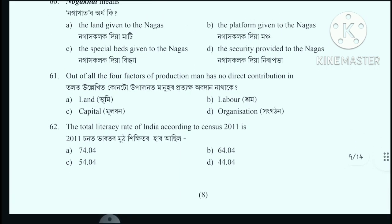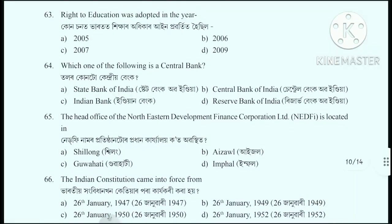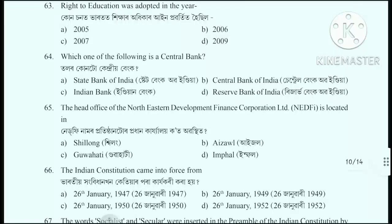Question number 61: Out of all the four factors of production, man has no direct contribution in - the correct answer. Question number 62: The total literacy rate of India according to census 2011 is. Question number 63 and 64: Which one of the following is a Central Bank? The answer for that question from 2021-2022 was option A.